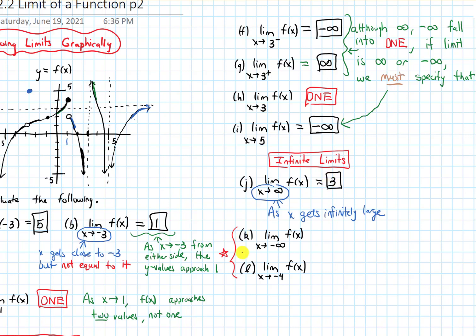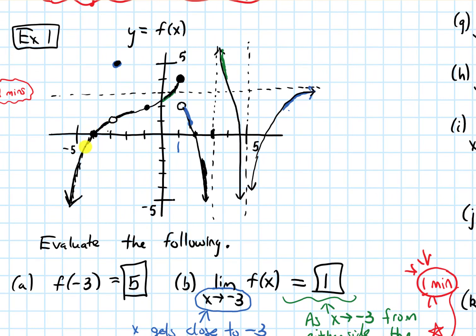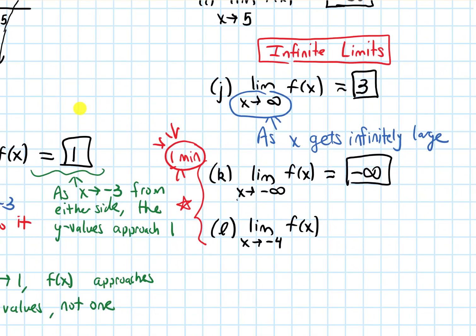For Parts K and L, pause the video and try these for about a minute. Part K: the limit as x approaches negative infinity — the x values are going in the negative infinity direction, way over to the left of the graph, and the outputs or y values are going to negative infinity. Part L: the limit as x approaches negative 4 — this is a two-sided limit. As the x values get super close to negative 4, the y values or outputs are getting close to zero. So that limit is 0.